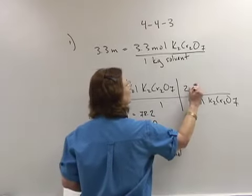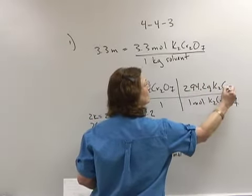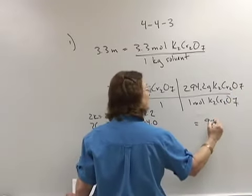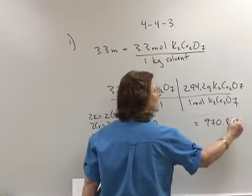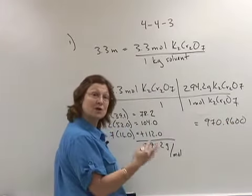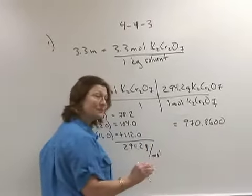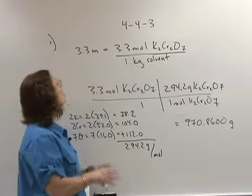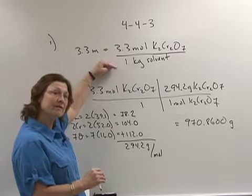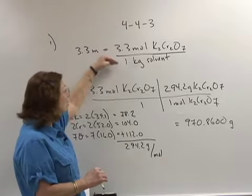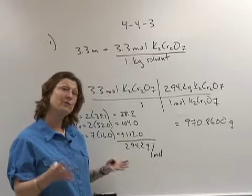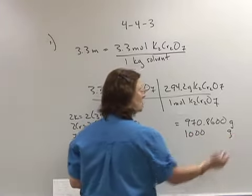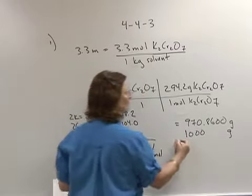When I do the math here I get 970.86, and these are my grams. Because this is molality I know that my solute and my solvent are the two parts of the solution, and I know that I have a kilogram of solvent, therefore I have 1,000 grams of my solvent. To get the total mass I will add them together.